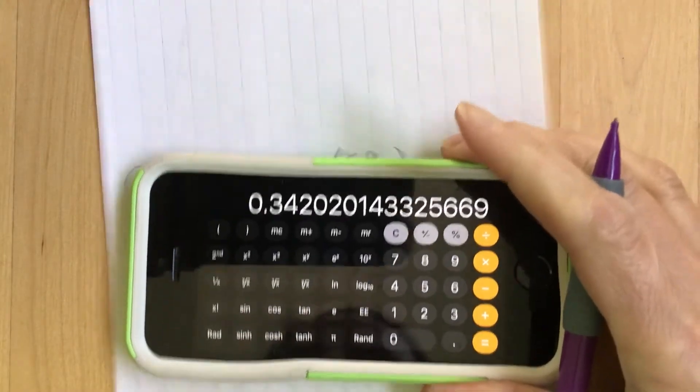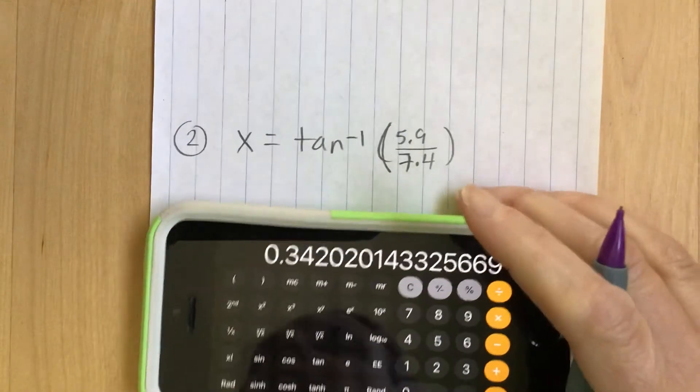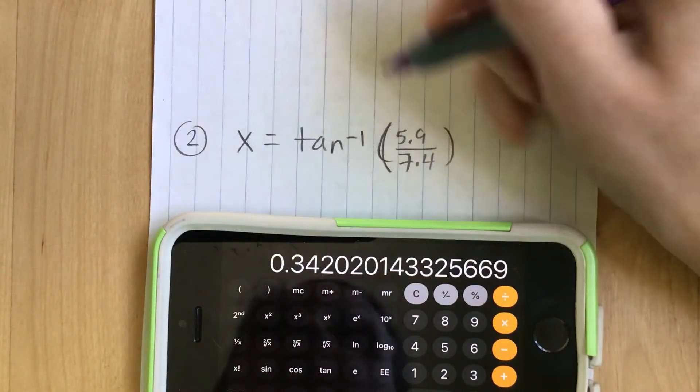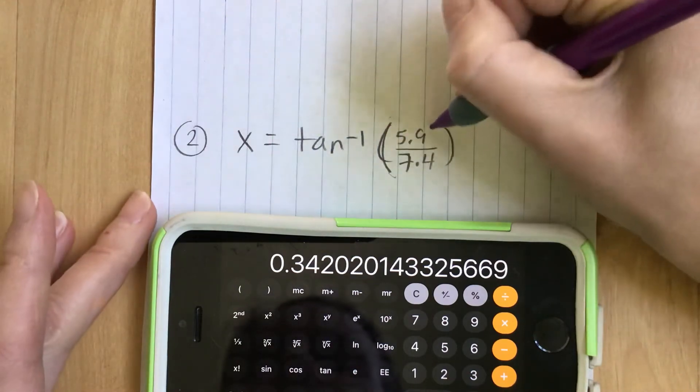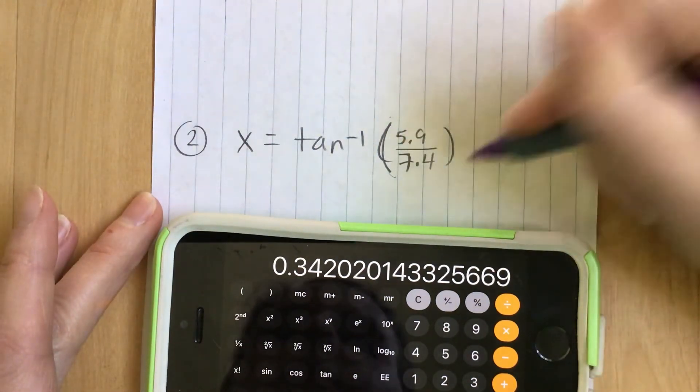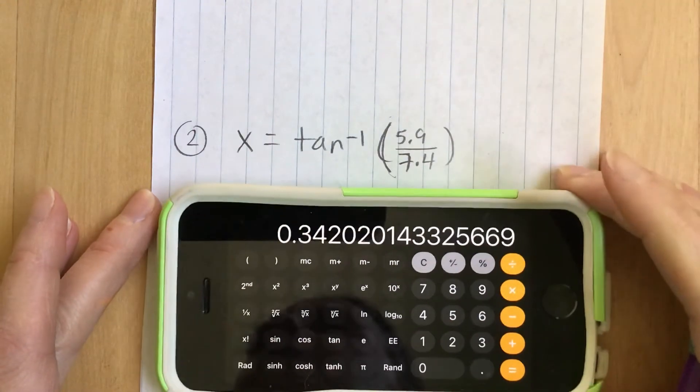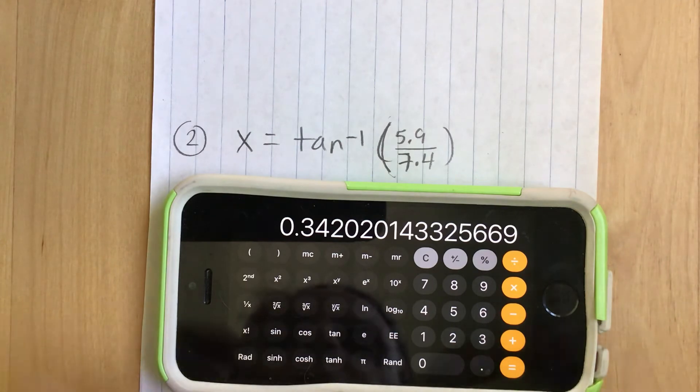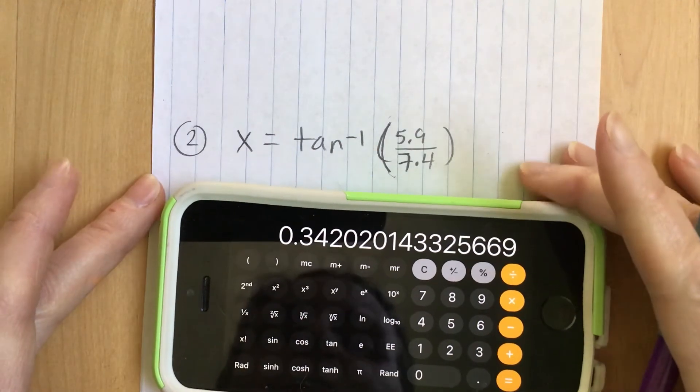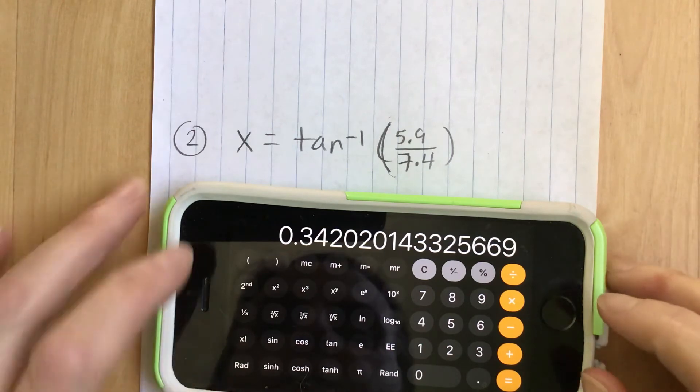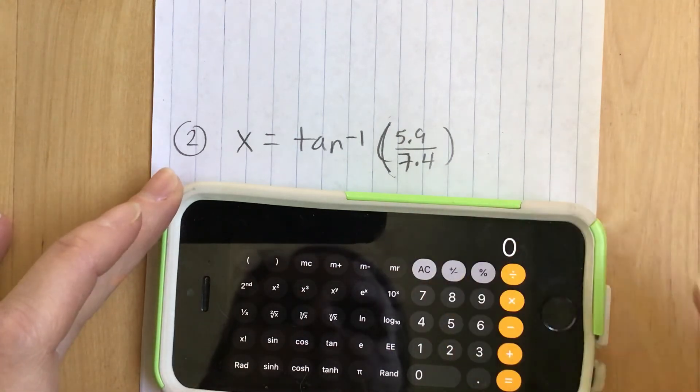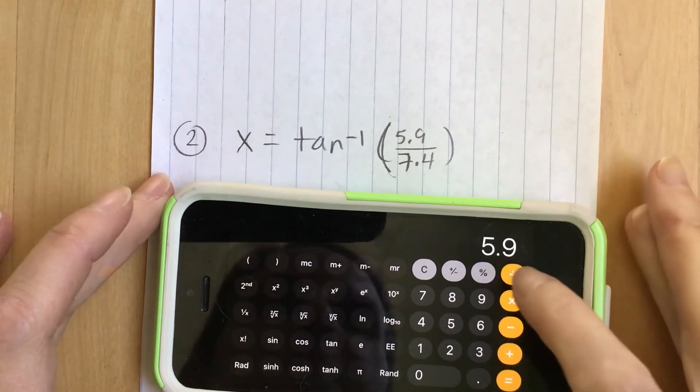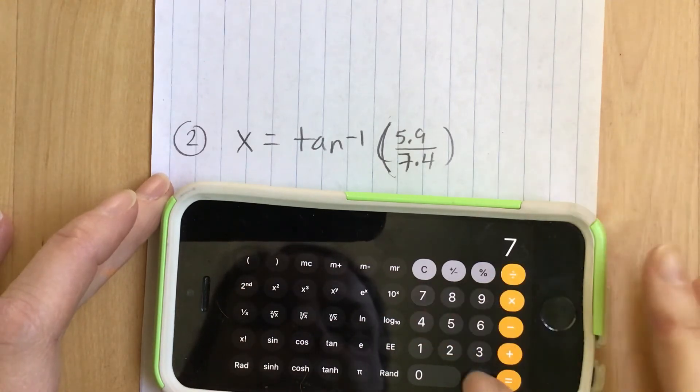Let's do what we would need to do if we were looking for an angle. So if we had x equals tan inverse and then bracket 5.9 divided by 7.4 close bracket. On the smartphone calculator and I shouldn't say for all but definitely for the one on the iPhone you can't just type it in like this. So we kind of have to go backwards. I'm going to just clear this first.